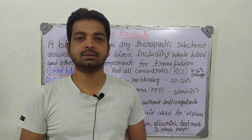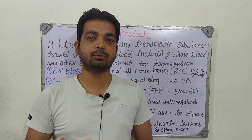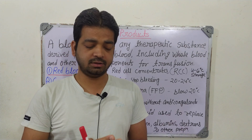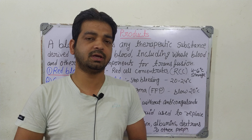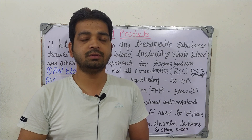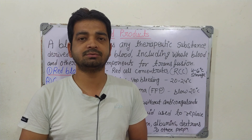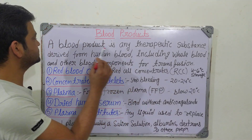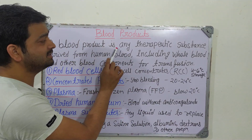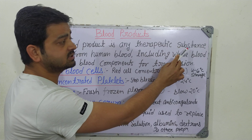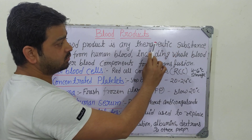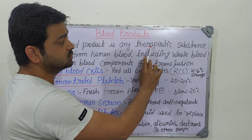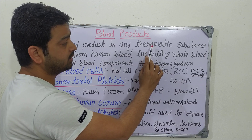Hello students, now we are going to discuss about blood products. As the name indicates, there are certain products which we can use for those who are running with the deficiency of certain blood components. A blood product is any therapeutic substance — we need to attach the word 'therapeutic' because it will be useful for therapeutic purposes only.